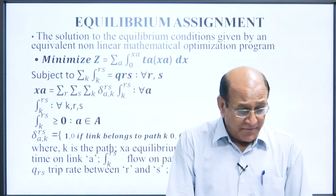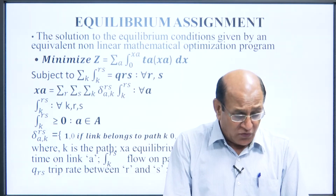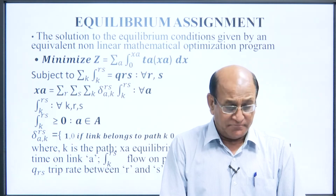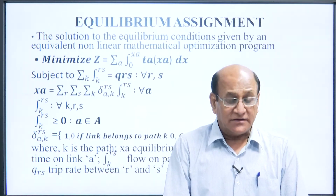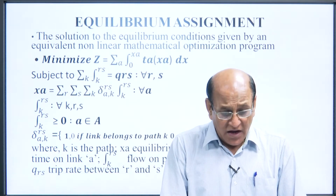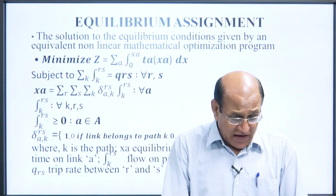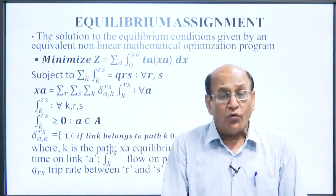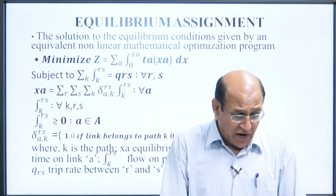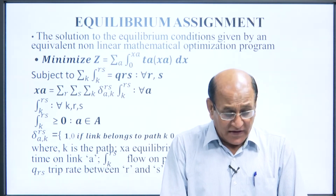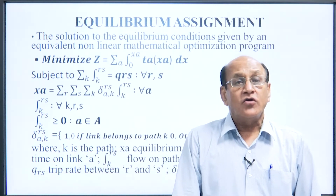Where delta(a,k,rs) = 1 if link a belongs to path k, 0 otherwise; k is the path; x(a) is the equilibrium flow on link a; t(a) is the travel time on link a; f(k,rs) is the flow on path k connecting OD pair r-s; q(rs) is the trip rate between r and s; and delta(a,k,rs) is a constant.